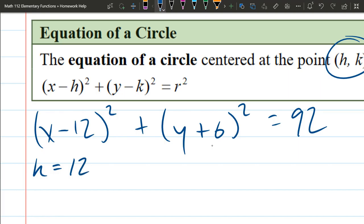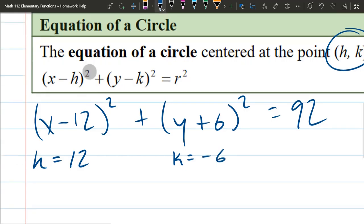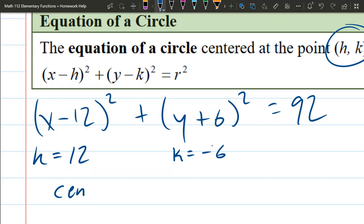And over here on the y, it looks like k is positive 6, but actually, you have to flip the sign. So k is actually negative 6. And we write the center (h, k) = (12, -6).